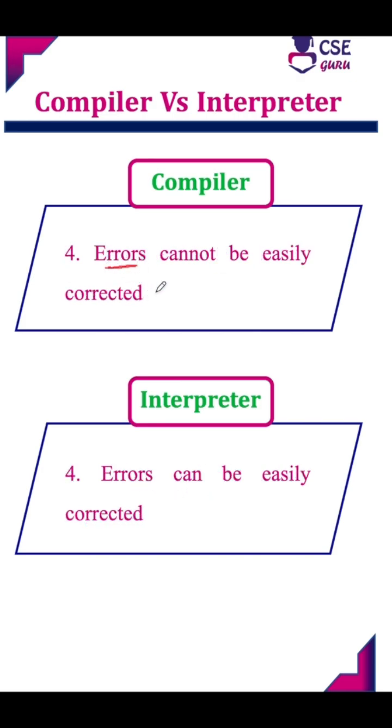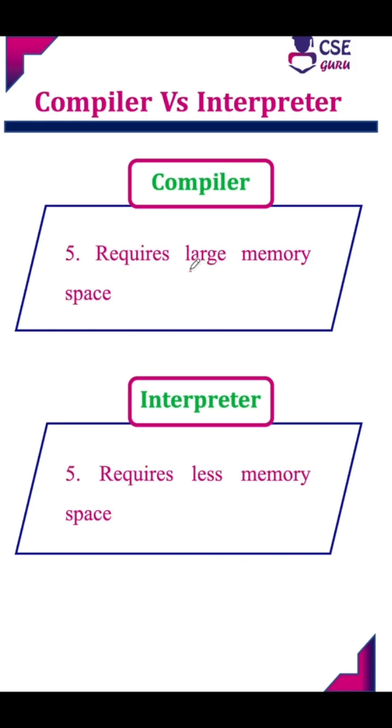In a compiler, errors cannot be easily corrected. In an interpreter, the errors can be corrected easily.